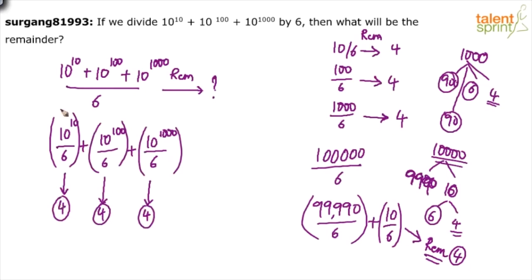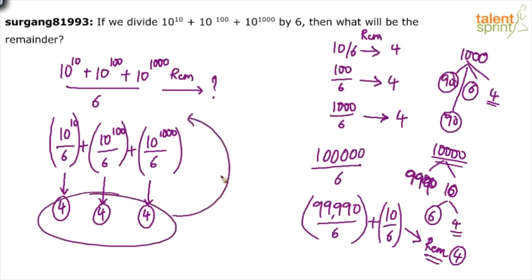These three remainders of 4 are all remaining in the numerator itself. So 4 + 4 + 4 = 12. Out of 10^10, the larger portion is divisible by 6 with 4 remaining; similarly 4 from 10^100 and 4 from 10^1000. These three fours added together in the numerator give 12, and 12 is divisible by 6, so the remainder from 12 ÷ 6 is 0.